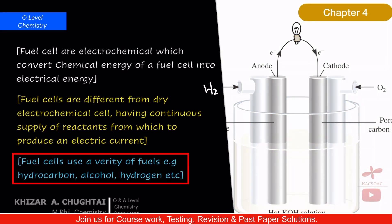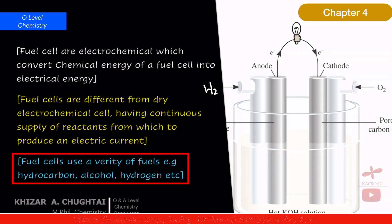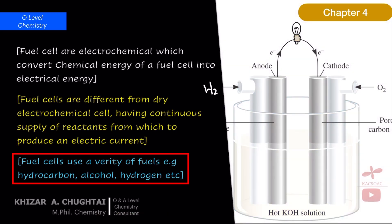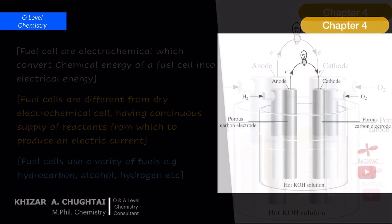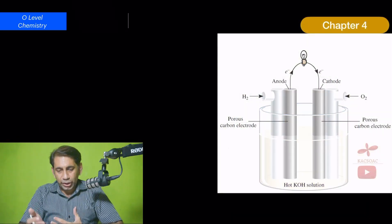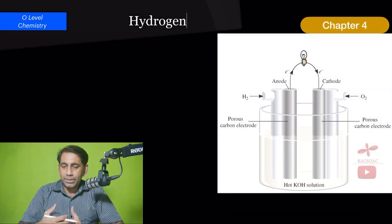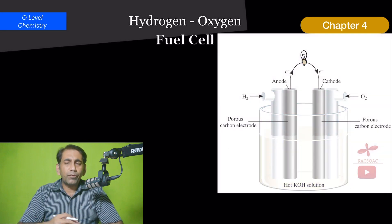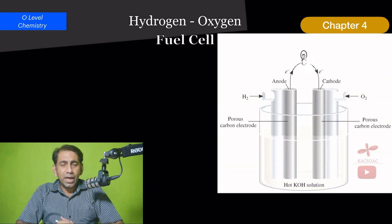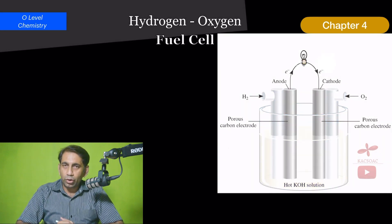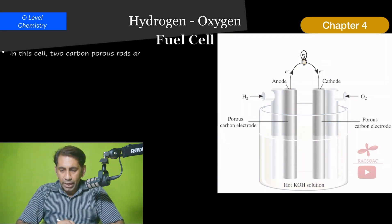Fuel cells use a variety of fuels — for example, hydrocarbon fuel cells, alcoholic fuel cells, and hydrogen-oxygen fuel cells. In this topic we are going to discuss the hydrogen-oxygen fuel cell.